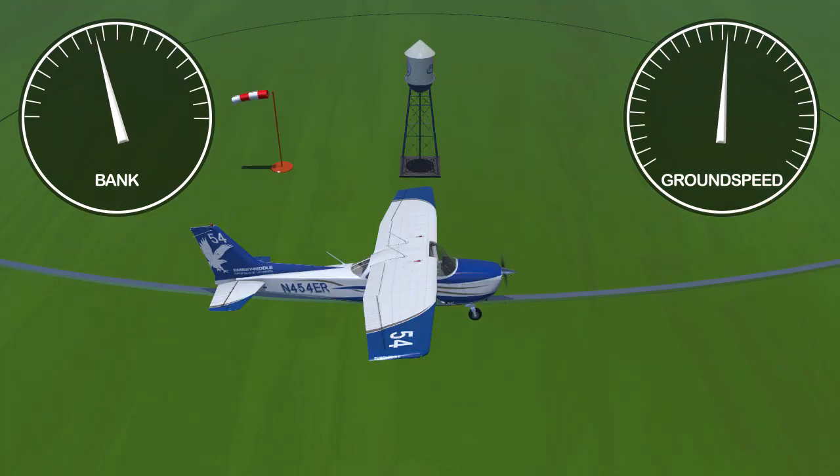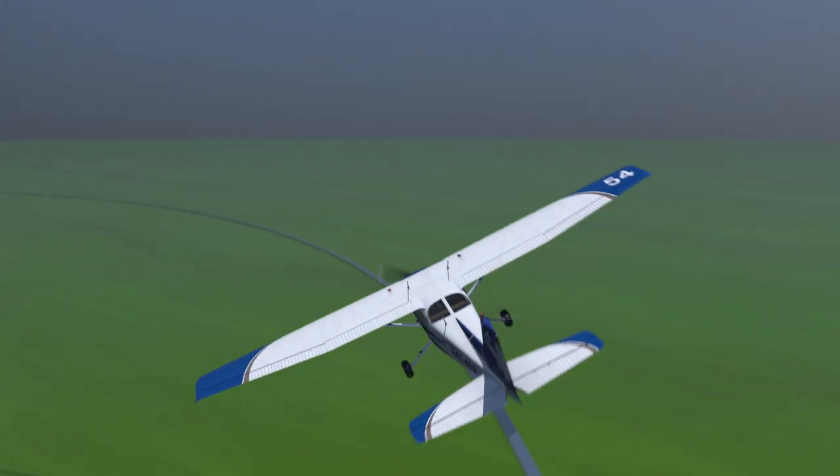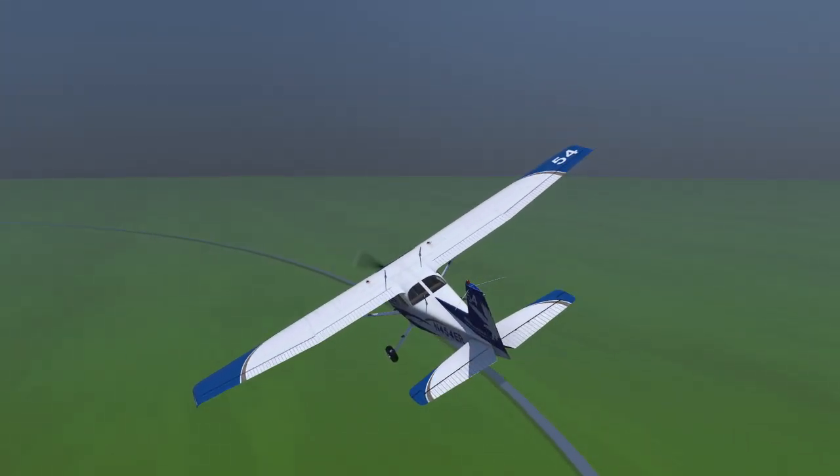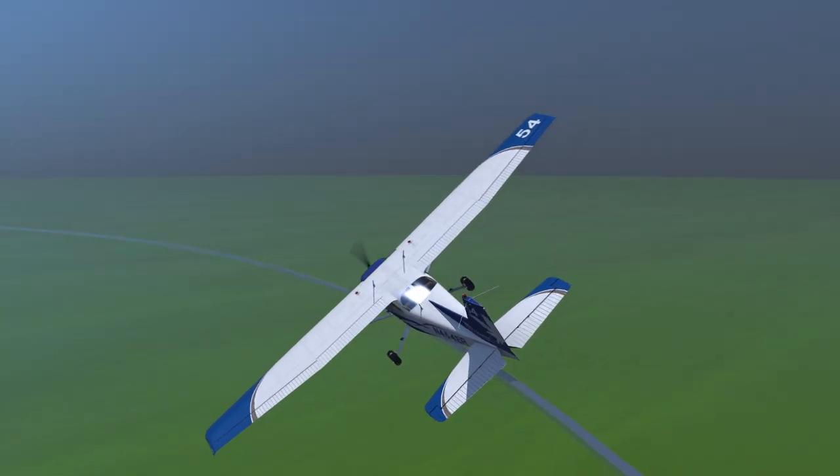When flying on the upwind heading, your ground speed will be the least. This part of the circle will require the shallowest angle of bank and the slowest rate of turn. You can therefore see that to maintain this constant radius, the airplane's bank and rate of turn will gradually but continuously change in proportion to the ground speed.